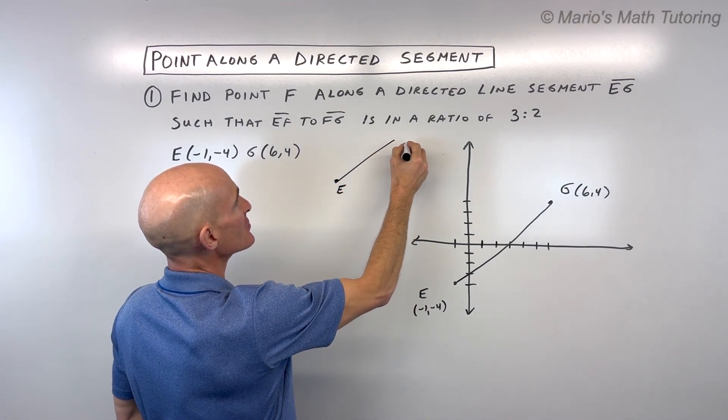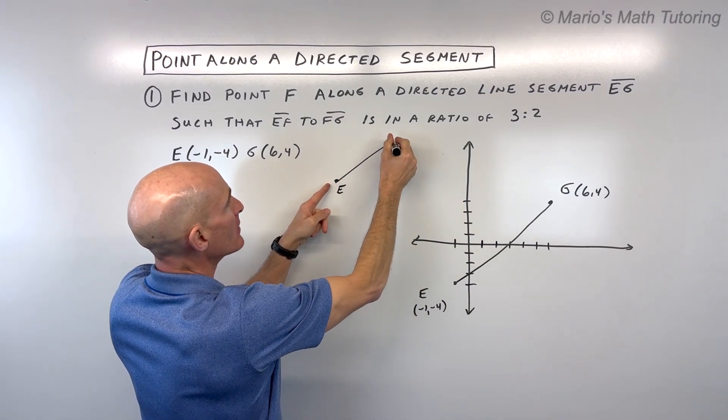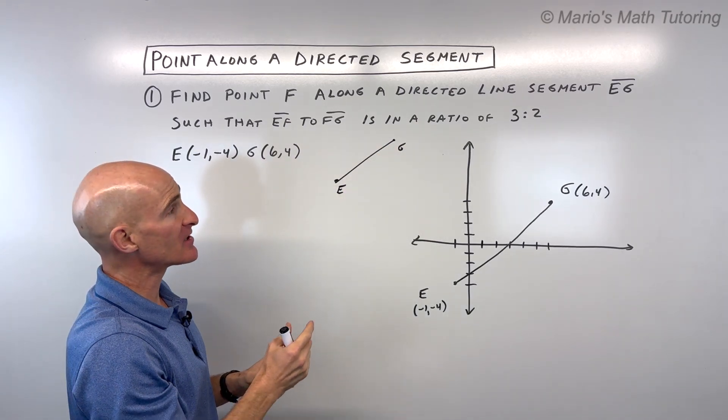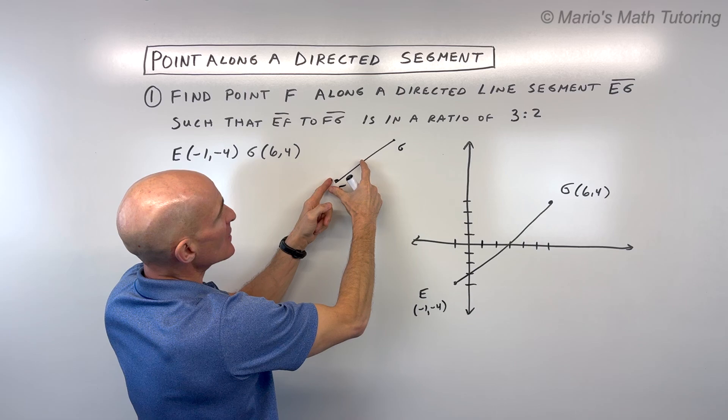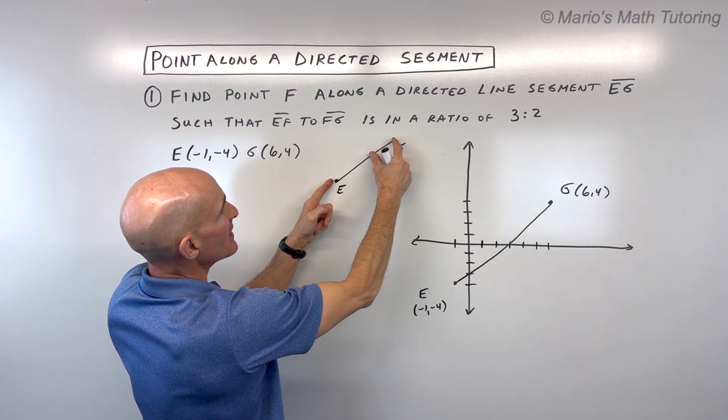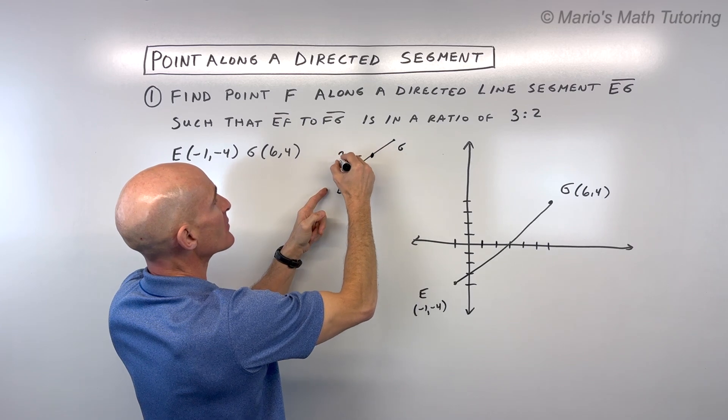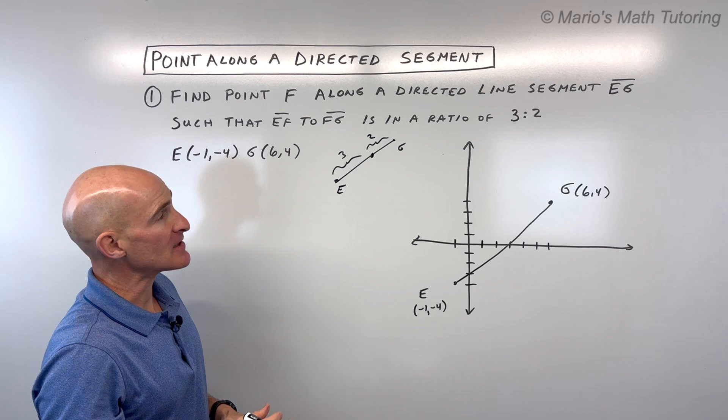Well, let's just kind of visualize that you have this line segment like so. Say here's E, say here's G. We're trying to find that point F somewhere along this line segment from E towards G, such that it divides it up in the ratio of 3 to 2. So you can see that it would be a little bit closer to G than it is to E. It would probably be somewhere right about here, so that this part is like three pieces and this part here is like two pieces.